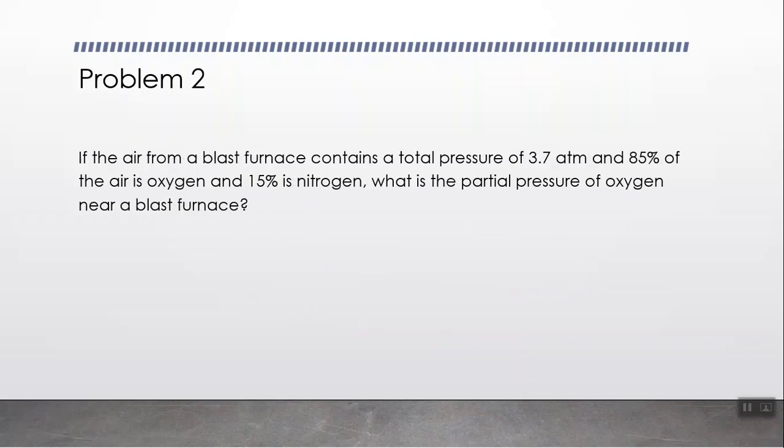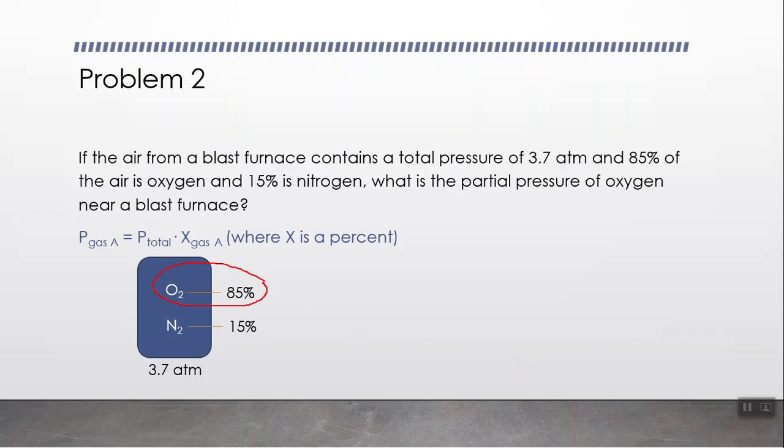Problem number two. If the air from a blast furnace contains a total pressure of 3.7 atmospheres, 85% of it is oxygen and 15% is nitrogen, what is the partial pressure of oxygen near a blast furnace? First, what do you notice about the percentages? They add up to 100%, so we're only dealing with these two gases. In this container, we have oxygen and nitrogen gas with a total pressure of 3.7 atmospheres. Which one do I want to focus on? Just oxygen. Even though the nitrogen information is given, I don't care about it because they're not asking for nitrogen. Another way to look at this problem is, what is 85% of 3.7 atmospheres?